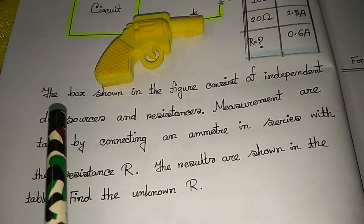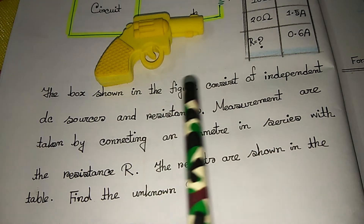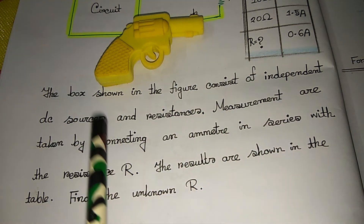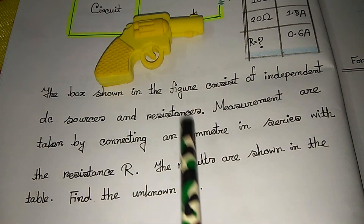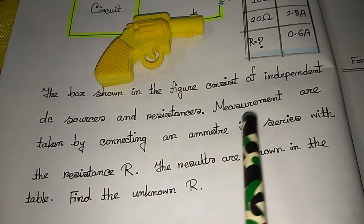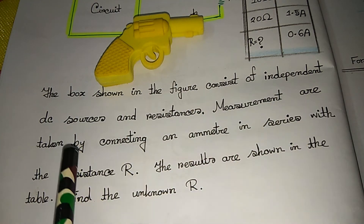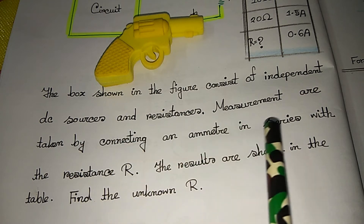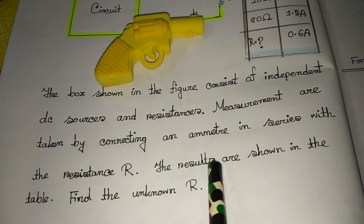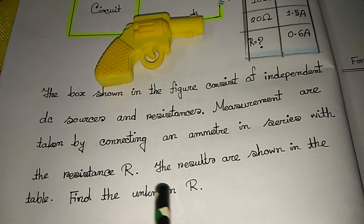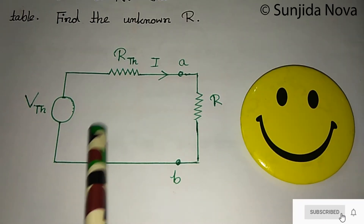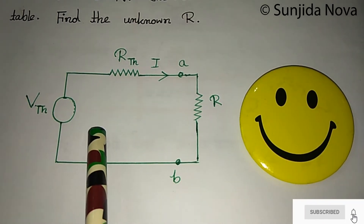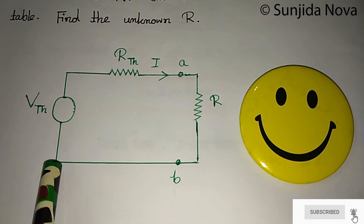The box shown in the figure consists of independent DC sources and resistances. The measurements are taken by connecting an ammeter in series with the resistance R. The results are shown in the table. Find the unknown R. We will see the calculation in the first step diagram.